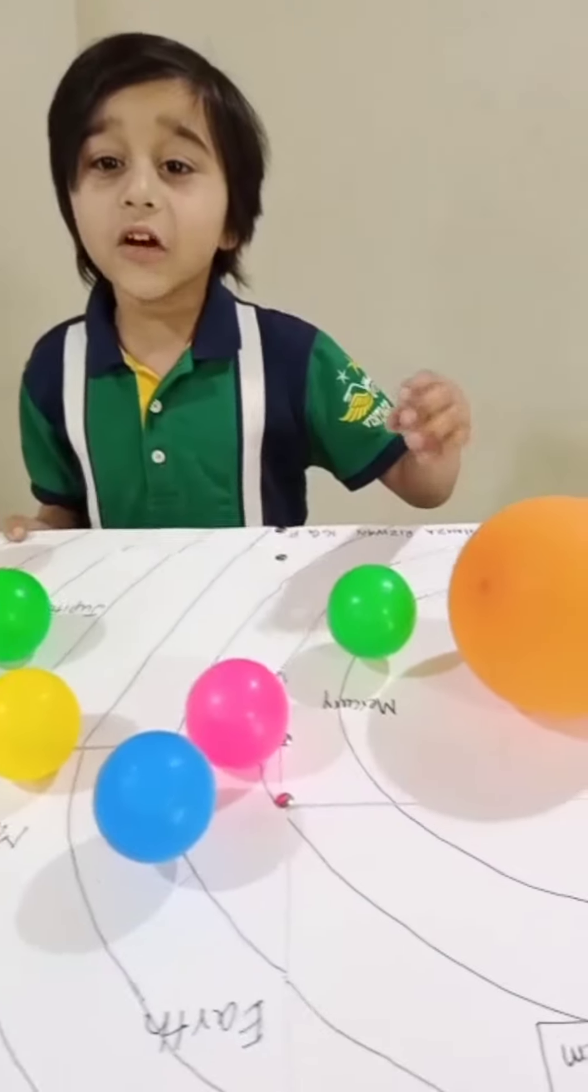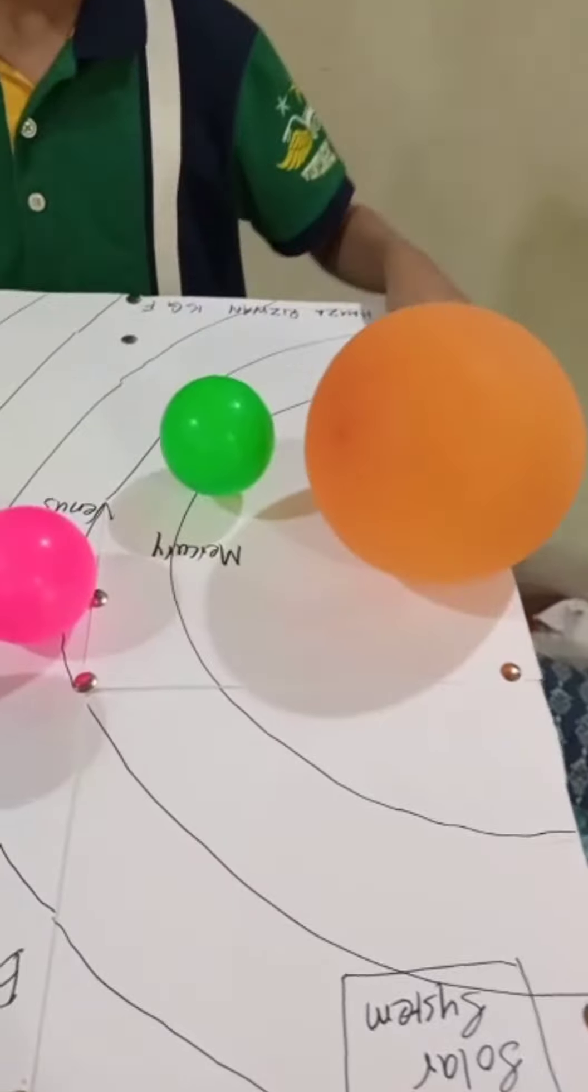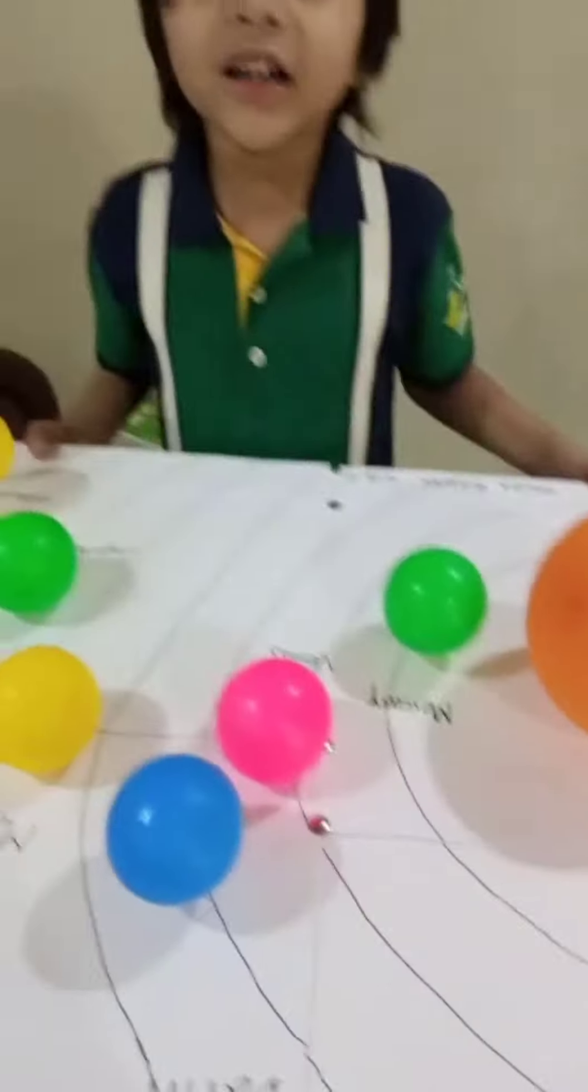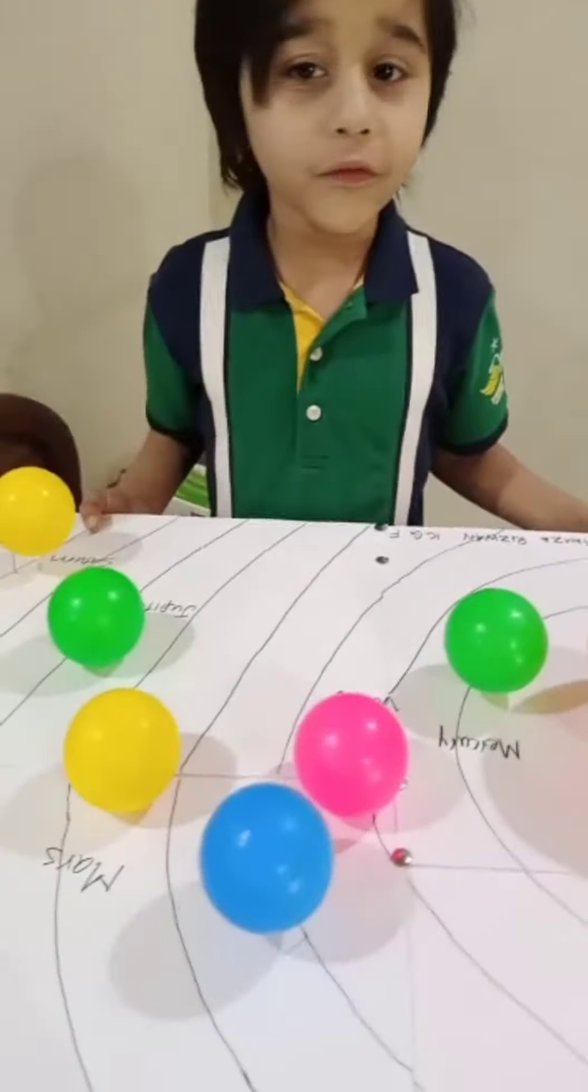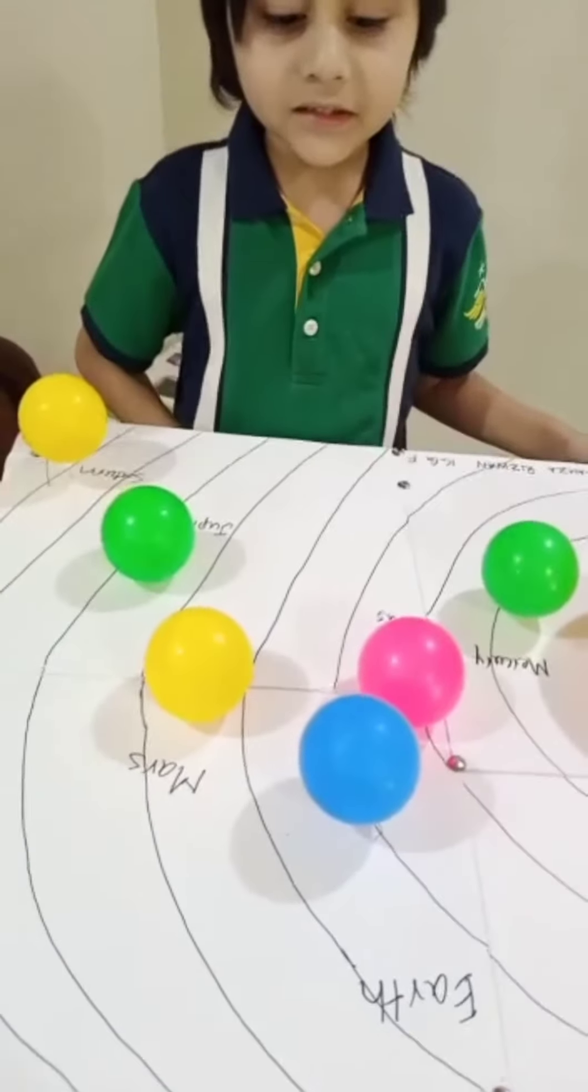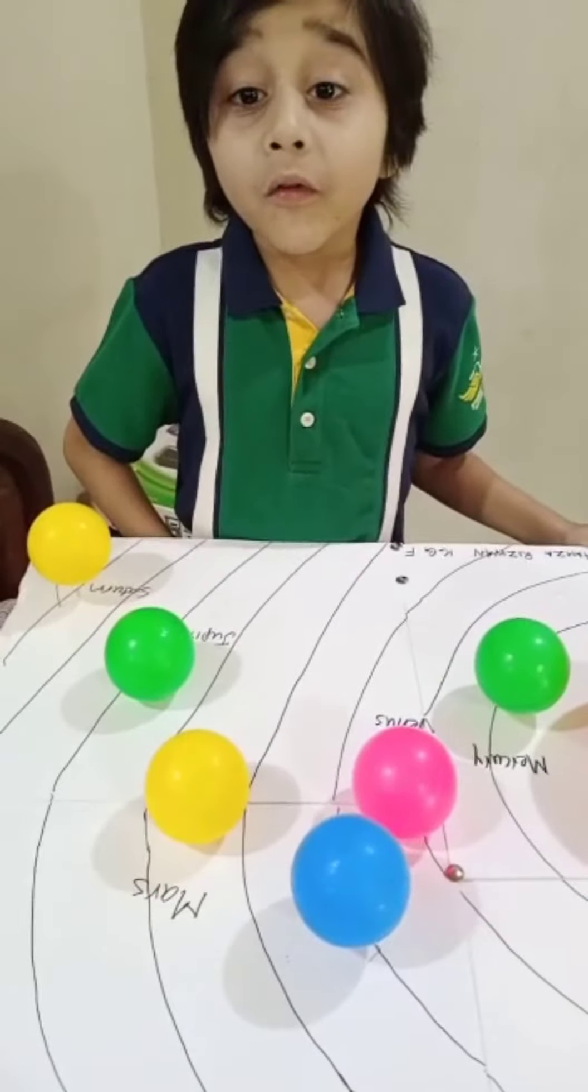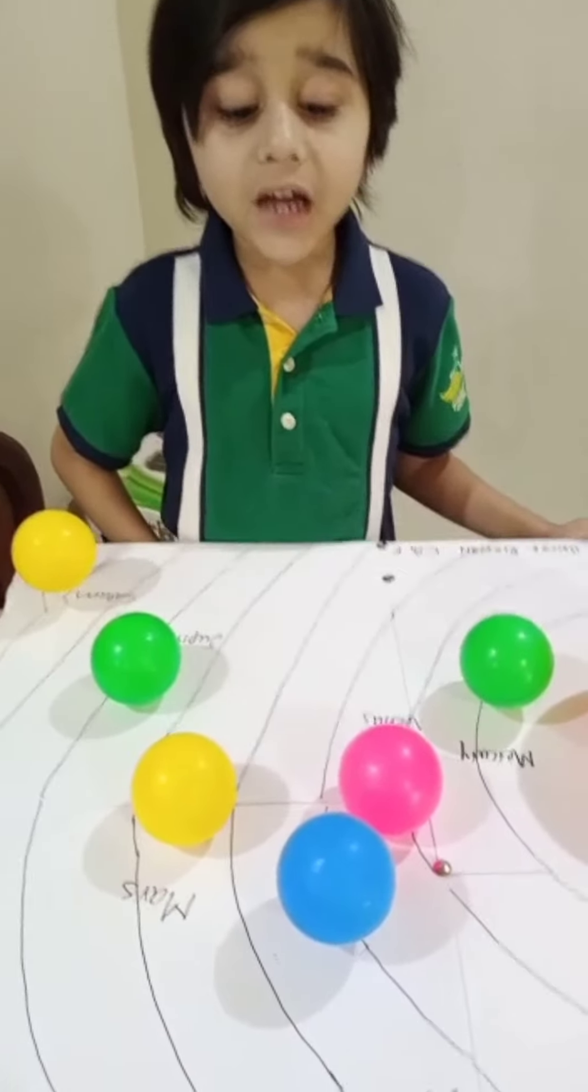The sun is the center of the solar system and it does not move. There are 8 planets and they revolve around the sun.